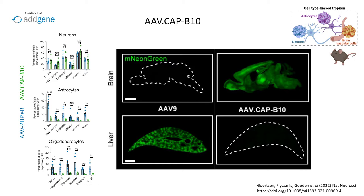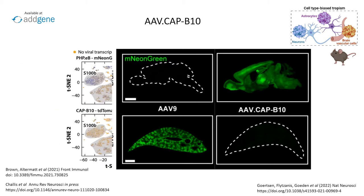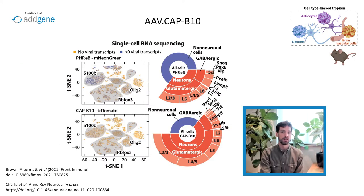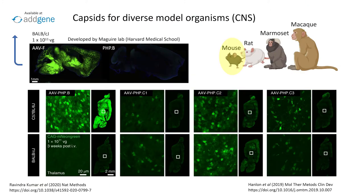A new single-cell RNA sequencing platform for AAV characterization developed in the Gratinaru lab showed that in the cortex, CAP-B10 broadly transduces molecularly defined neuronal cell types and appears to more potently target glutamatergic neurons than PHP-EB. Now we'll return to PHP-B and its variable performance across mouse strains.